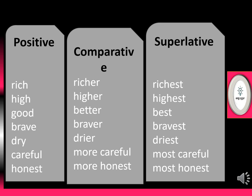Superlative degree: richest, highest, best, bravest, driest, most careful, most honest. In positive I have written 'rich'; in comparative degree it becomes 'richer'; and in superlative degree it becomes 'richest'. So what is the difference between comparative and superlative? ER and EST. Here you can see: 'more careful' changes into 'most careful', and similarly 'more honest' becomes 'most honest'.